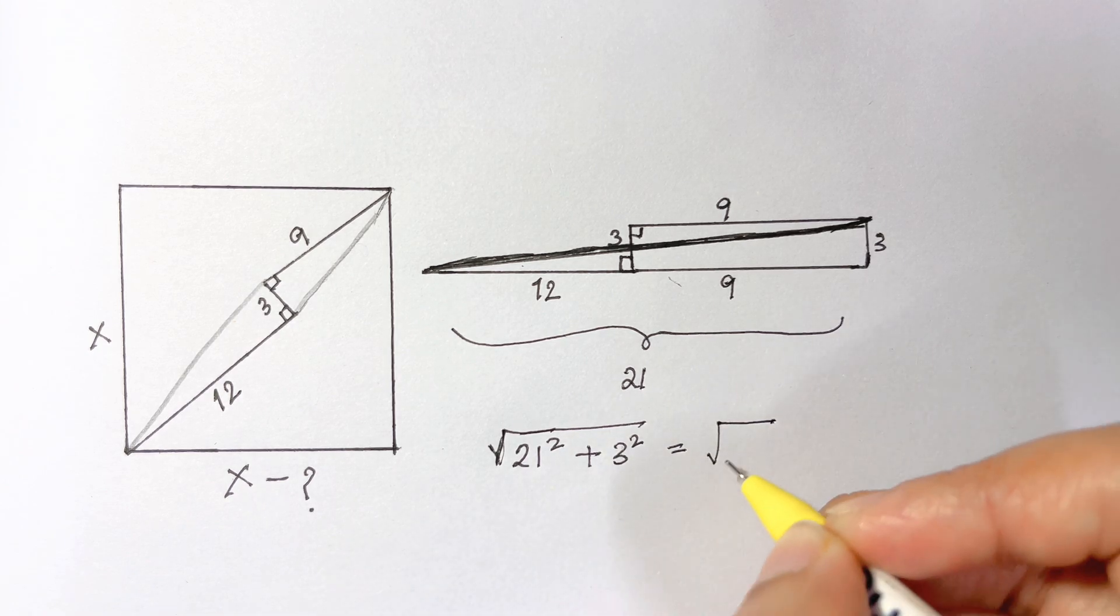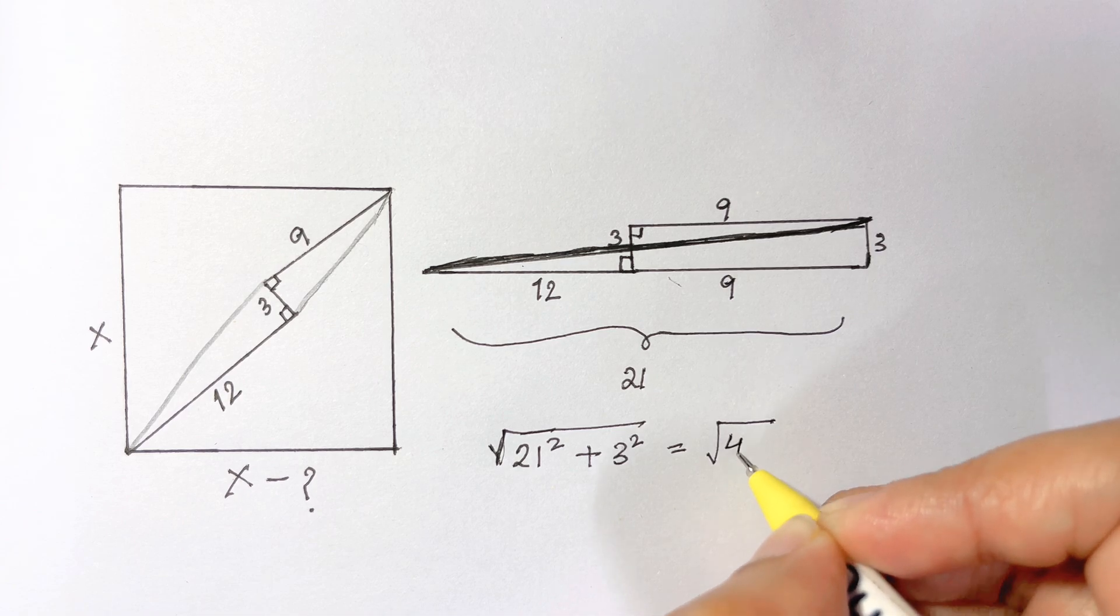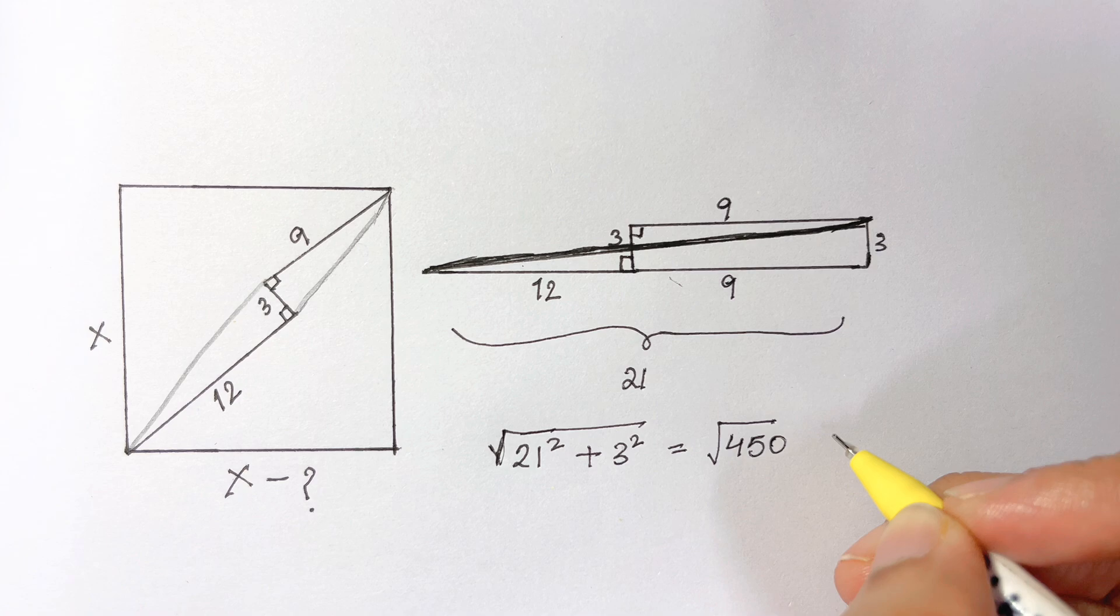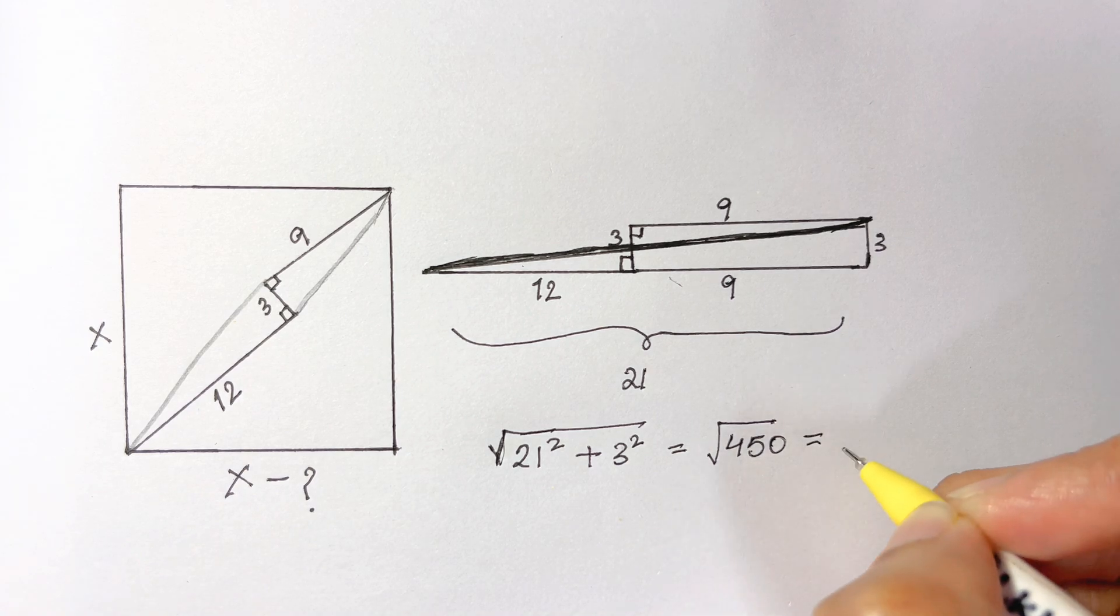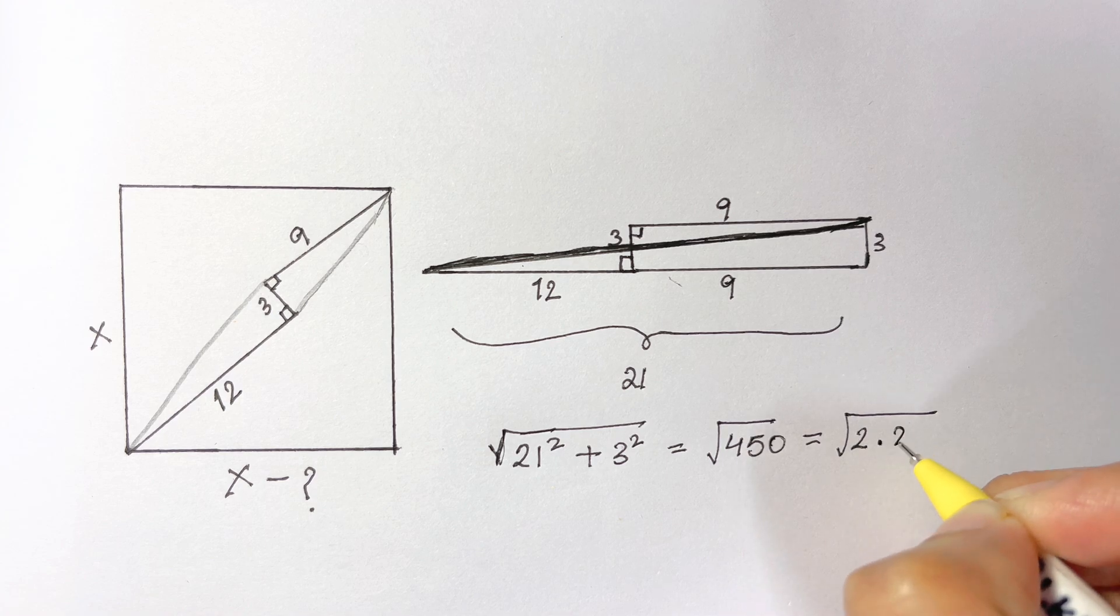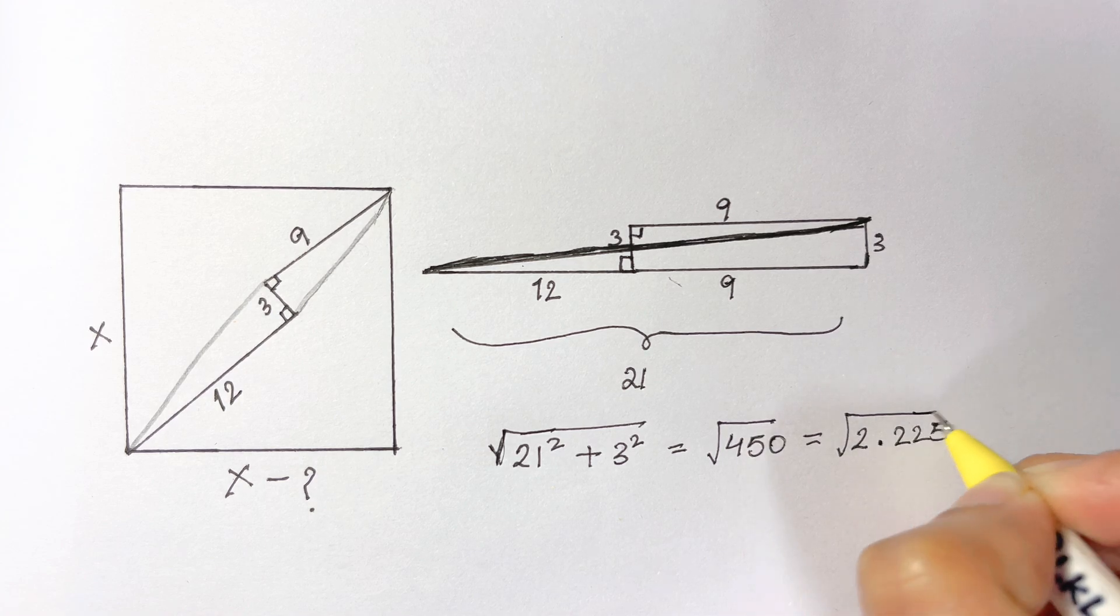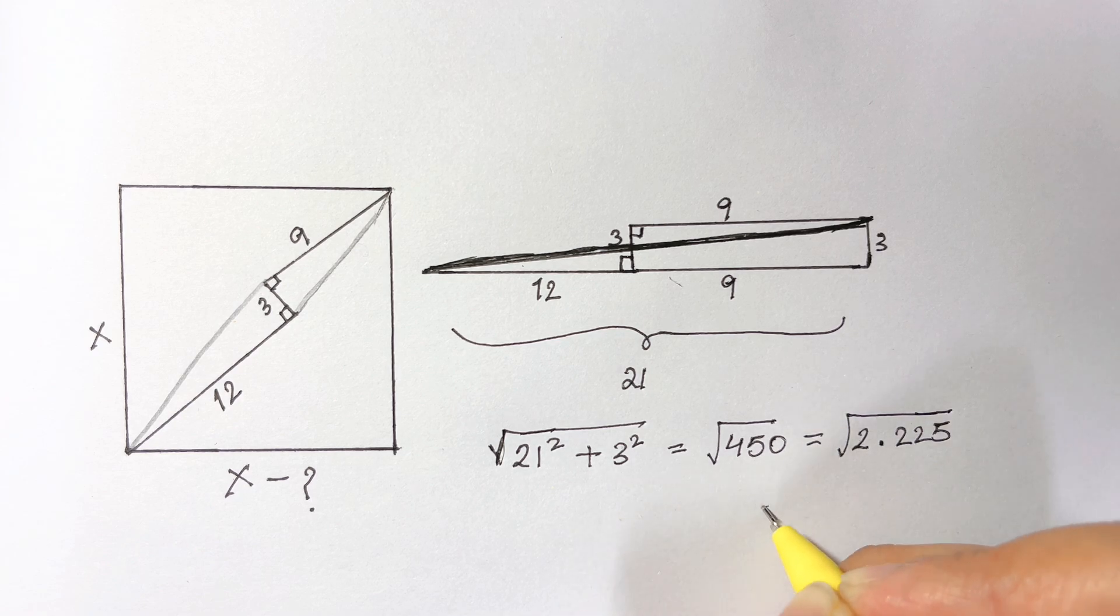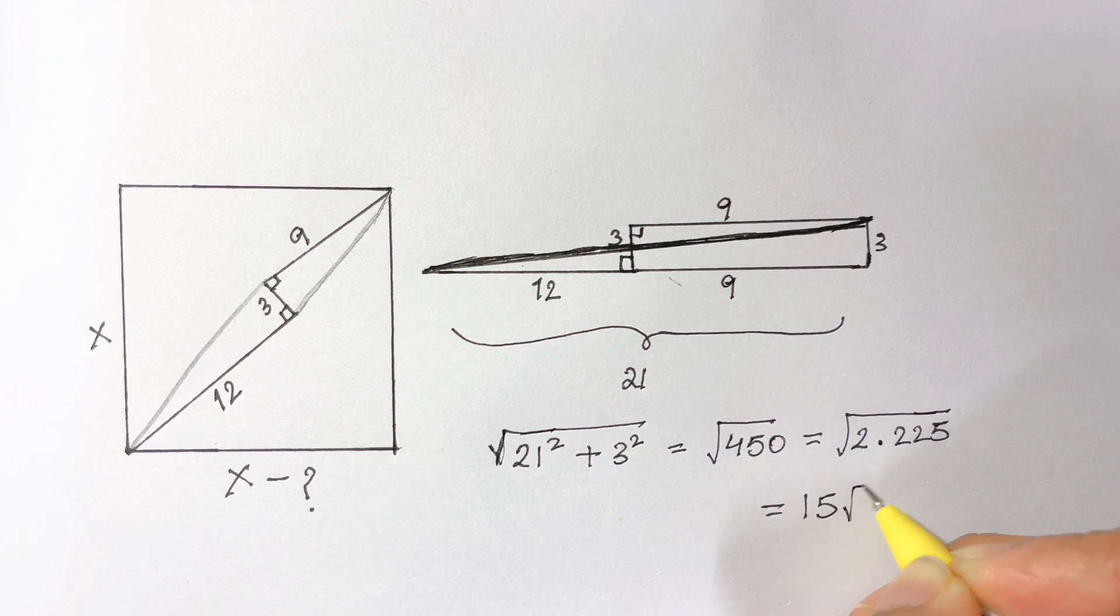So let's add them. That's equal to square root of 450, and that's equal to square root of—you can write it as 2 times 225. The square root of 225 is 15, so that's equal to 15 square root of 2.